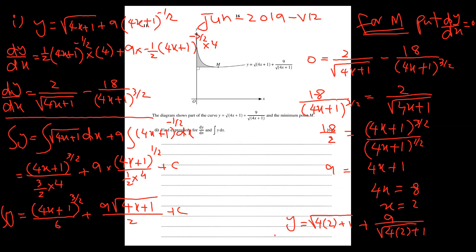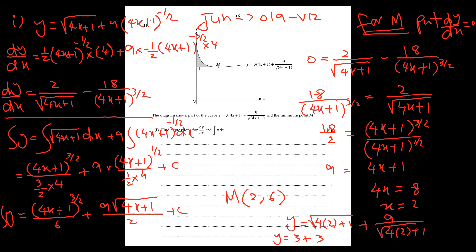A student asks about the step where 9 equals (4x+1) cubed. Confirmed: 2 divides into 18 to give 9, and then cross-multiplication puts the top expression there — agreed. Now substituting x=2 back into the equation: 4 times 2 is 8, plus 1 is 9, root of 9 is 3; so y equals 3 plus 3 equals 6. M coordinate is (2, 6). Alhamdulillah.